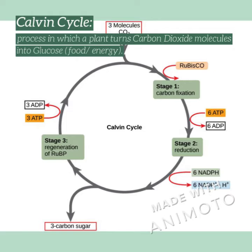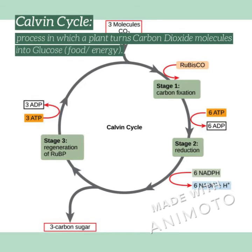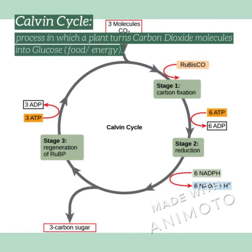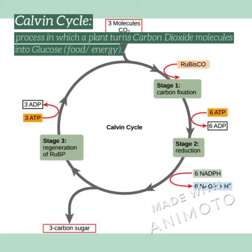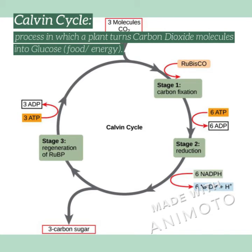The Calvin cycle is a process in which a plant turns carbon dioxide emissions into sugar, which is used for food and energy. In this picture, three molecules of CO2 go into the plant, are processed through rubisco, and generate food for the plant, then the process repeats again.